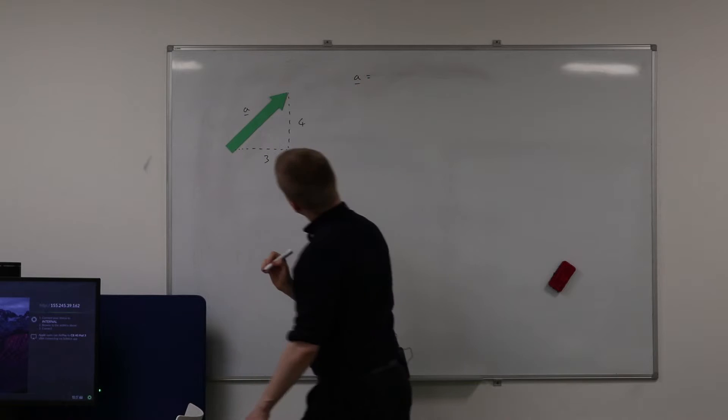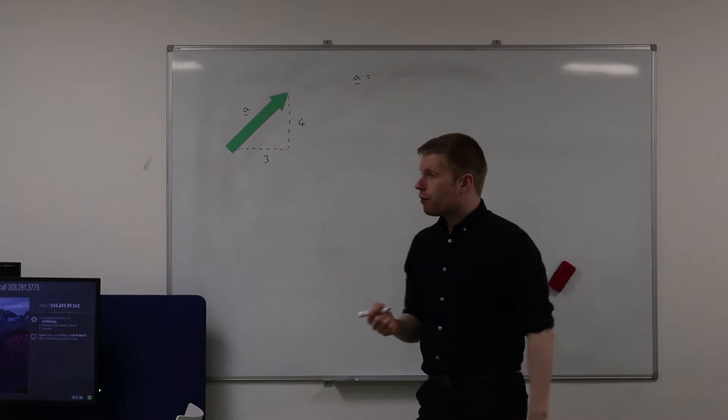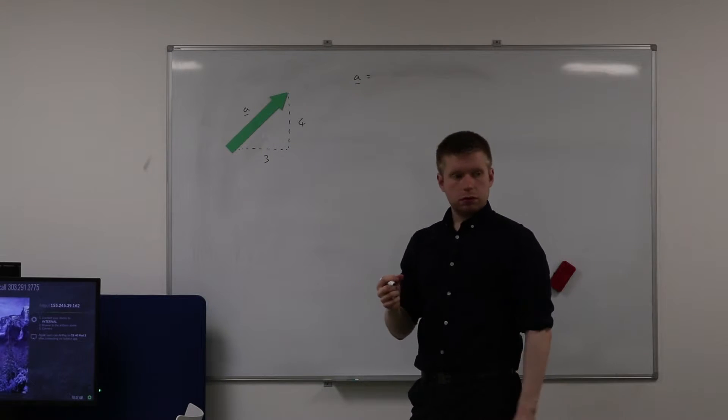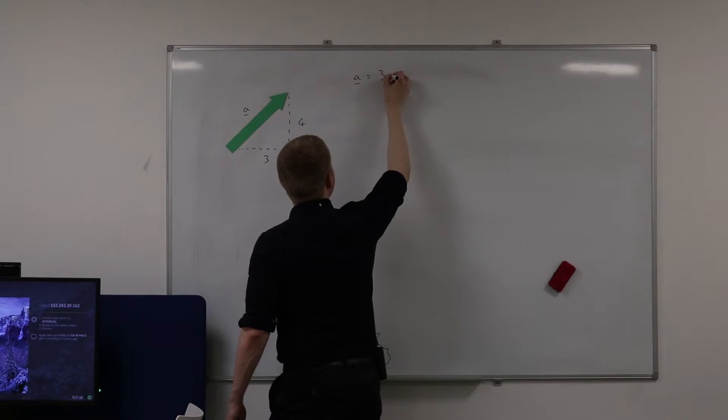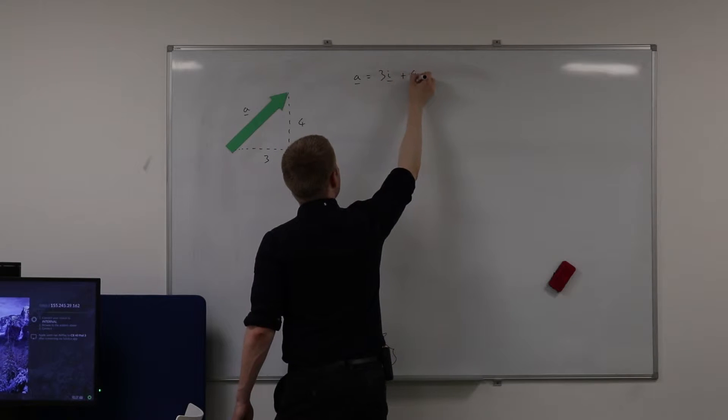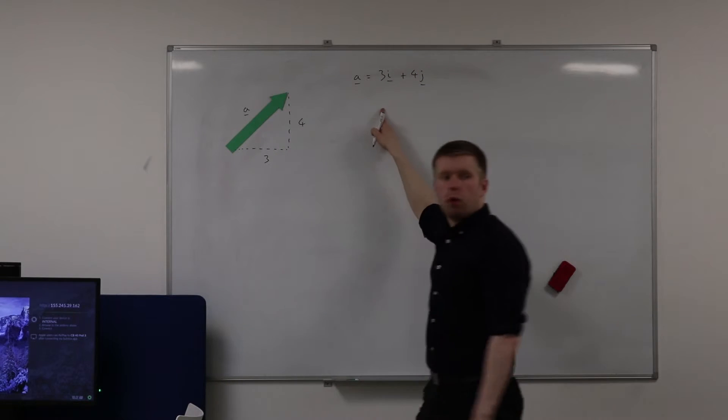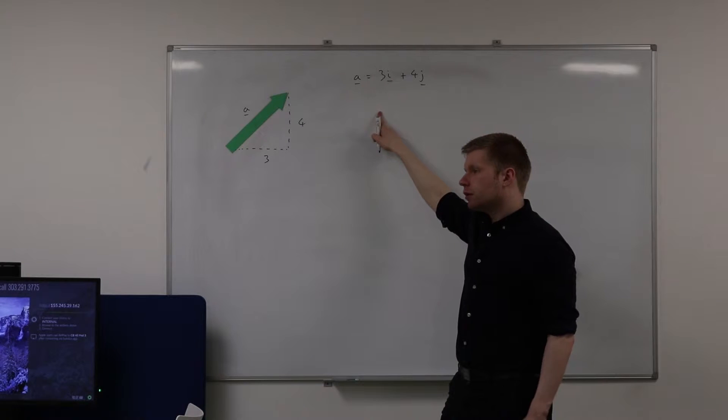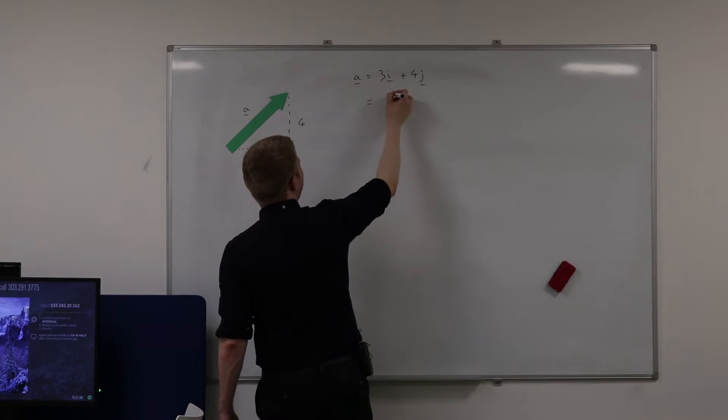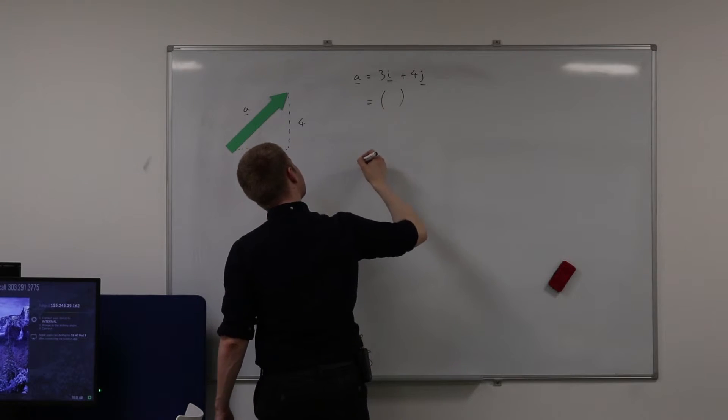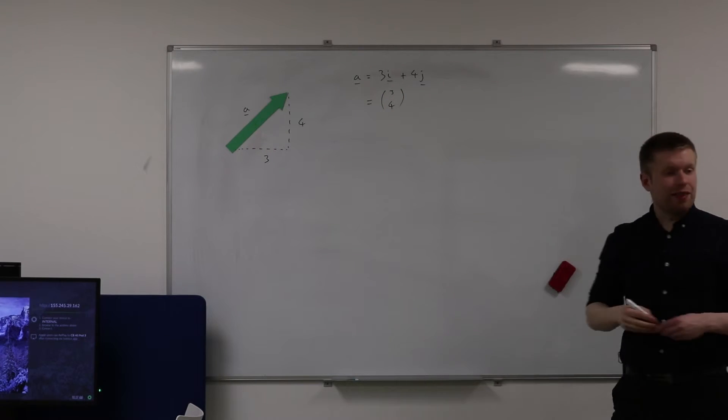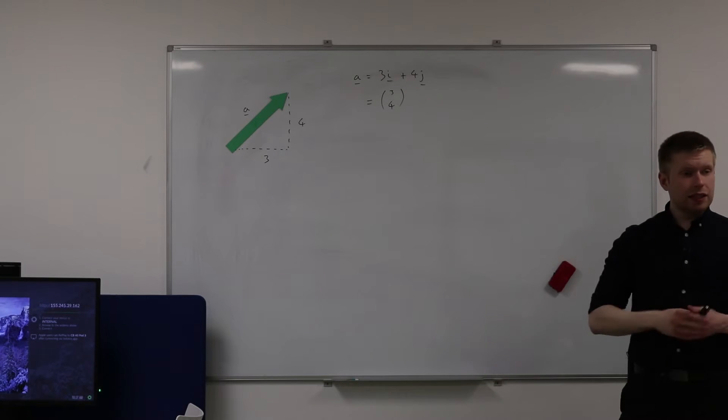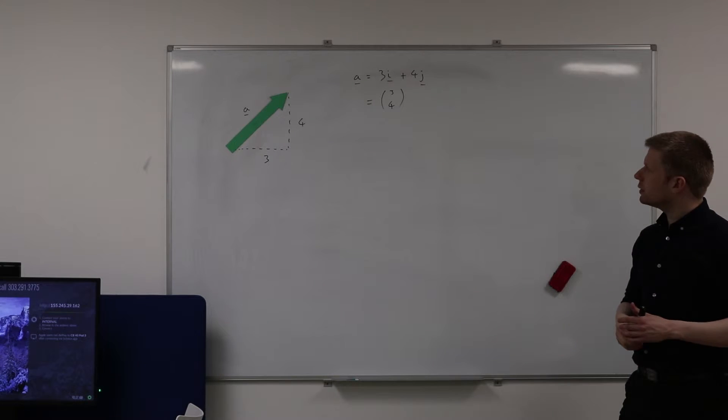There's a couple of ways I can write it. Can anybody give me one way of writing this? Good, 3i plus 4j. What's the other way of writing this? Column, good. So what goes on top and what goes on bottom? Yeah good, the horizontal and then the vertical underneath. So there's two ways of representing this vector.